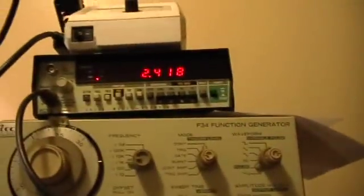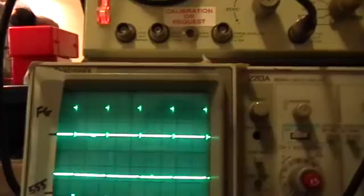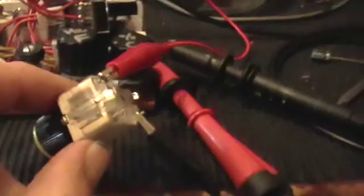We're running on the function generator at a short duty cycle. What I've done here is I've taken a small air variable tuning capacitor, and it's connected from the MOSFET gate at the attenuating resistor to the MOSFET drain connection at the load.